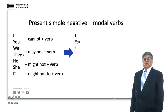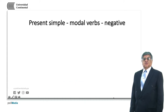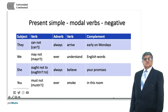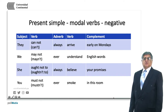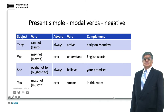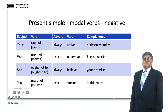Remember, modals are always placed before another verb. 'Ought not to' is placed before the verb 'oversleep', and 'not' is just after the modal in all cases. The particle 'not' goes just after the modal: cannot + verb, may not + verb, might not + verb, ought not to + verb. Examples: 'cannot speak Chinese', 'may not play chess', 'might not cook pizza', 'ought not to chat in class.' The verb after the modal goes in the infinitive. For example: 'They cannot always arrive early on Mondays.' In very advanced written English you may find 'can not' separated, but it is not much used lately. 'Can't' is the contracted form.